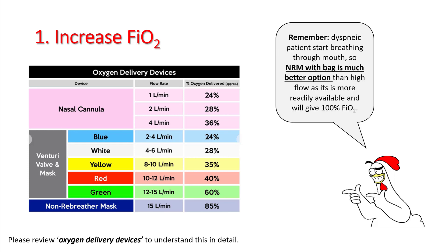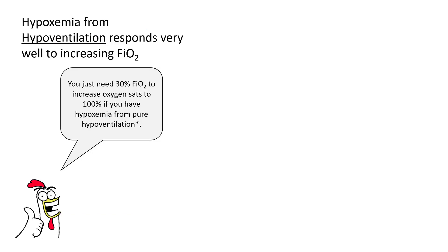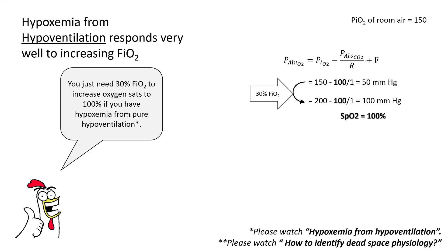However, when the patient is dyspneic, most patients will be breathing through their mouth, so even a high flow cannula can sometimes be inadequate. Go with the non-rebreather mask with a bag as it's a much better option and more readily available. Hypoxemia from hypoventilation responds very well to increasing FiO2 — in fact, you just need 30% FiO2 to correct their sats back to 100%. We discussed how this works in our previous lecture.